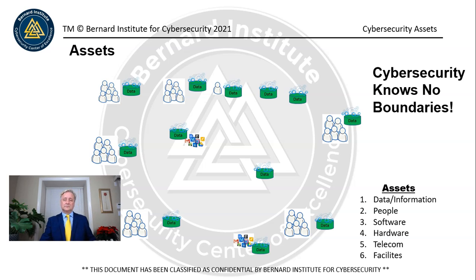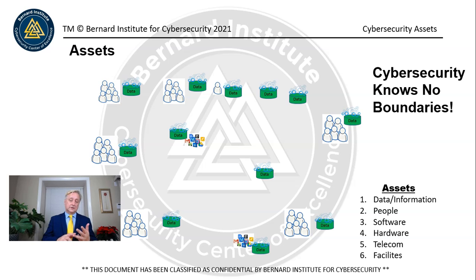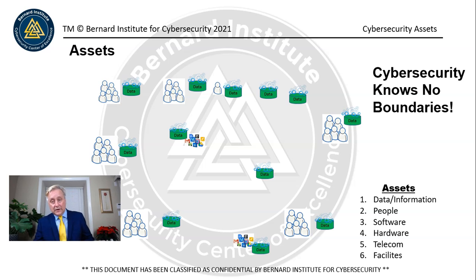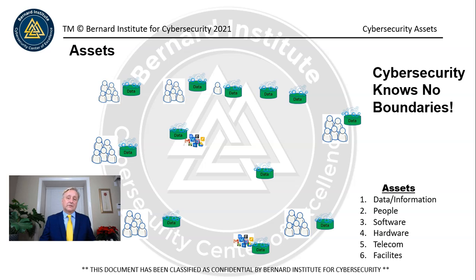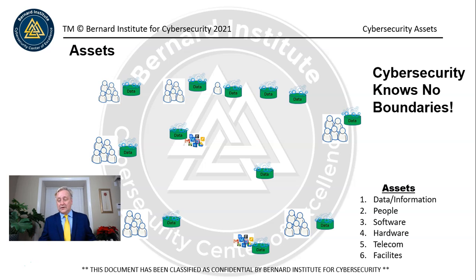We have software. Generally, all data requires software to add records, maintain the data, share it, and eventually delete it. There are many different types of software with different functions. We mentioned tools like SQL, which is used to data mine, extract, or report on data in a database. And then you have enterprise resource planning systems used to manage large data sets used by most enterprises during the conduct of their business.